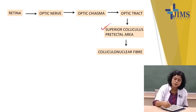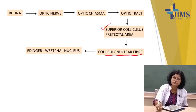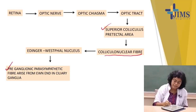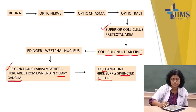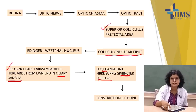Through colliculonuclear fibers — an interneuron fiber — the impulse goes to the Edinger-Westphal nucleus. From the Edinger-Westphal nucleus, the pre-ganglionic parasympathetic fiber arises and ends in the ciliary ganglia. From the ciliary ganglia, post-ganglionic fibers supply the sphincter pupillae, leading to constriction of the pupil. This is the light reflex pathway.